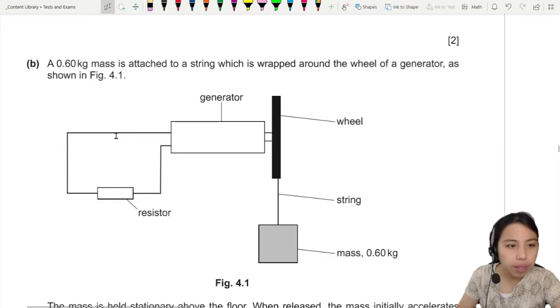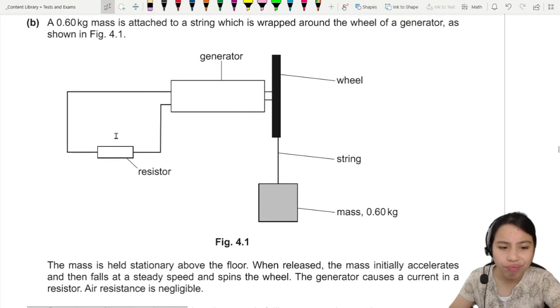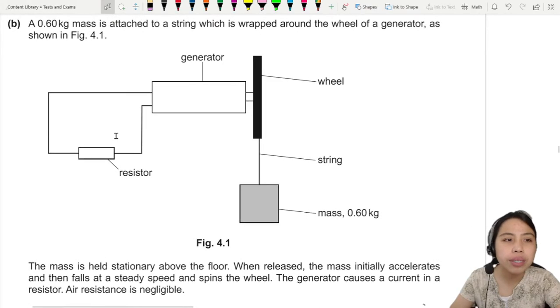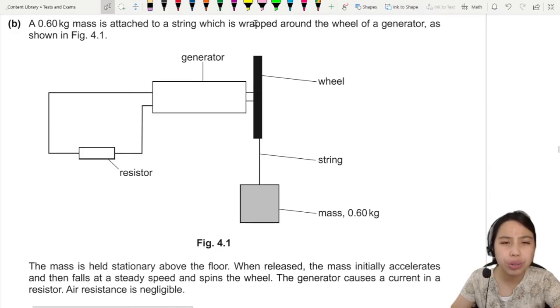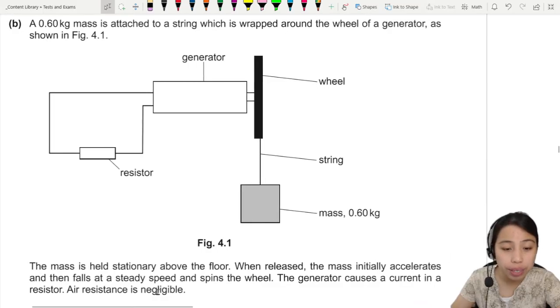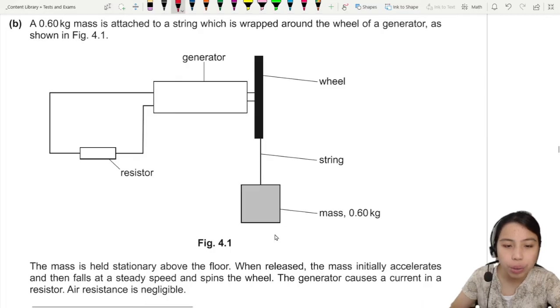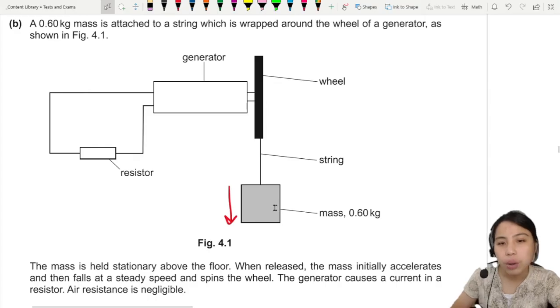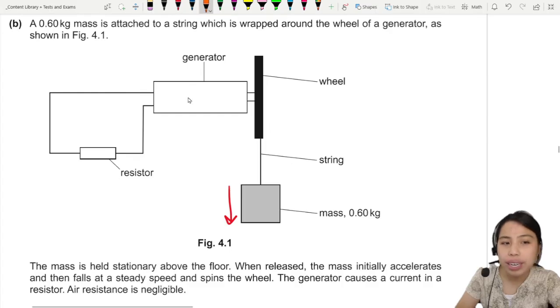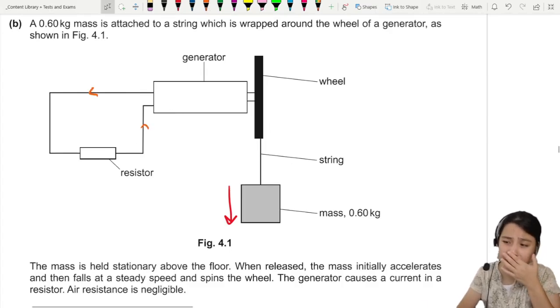Okay, so here's a generator machine. A 60 kg mass is attached to a string which is wrapped around the wheel of a generator, so this is a wheel here that can turn. The mass is held above the floor. When released, the mass accelerates and then falls at a steady speed. So as this mass goes down, the wheel will start to turn. The generator will start to generate electricity. It goes through the circuit. Air resistance is negligible.